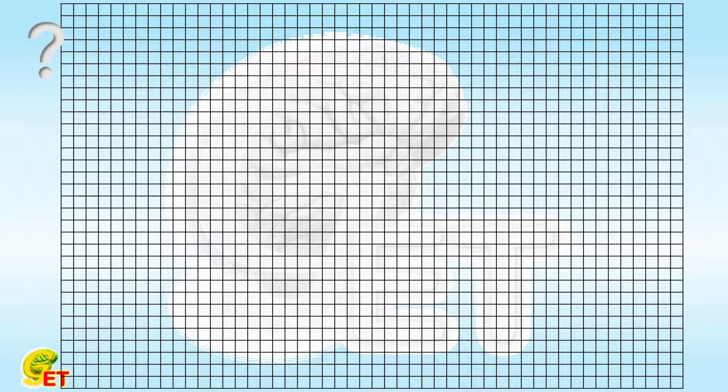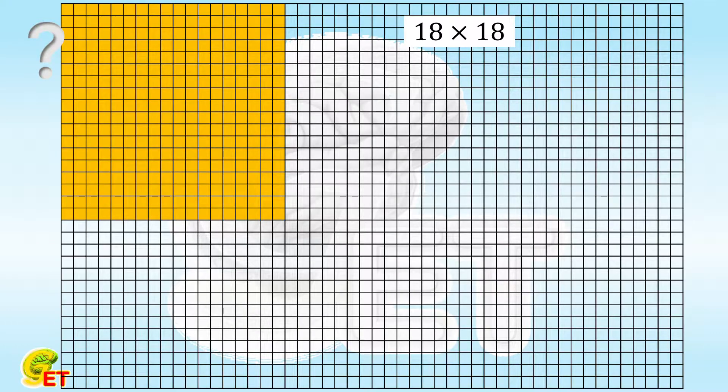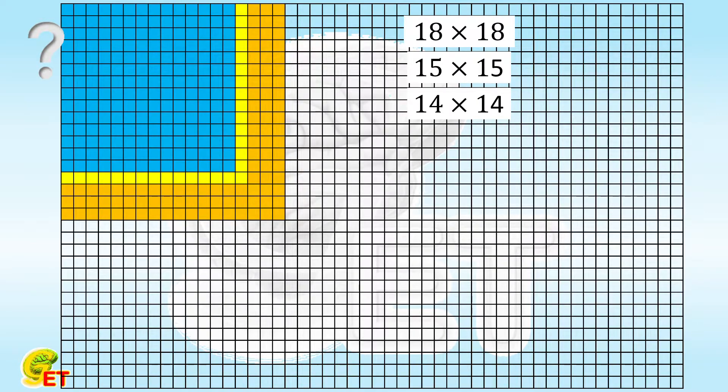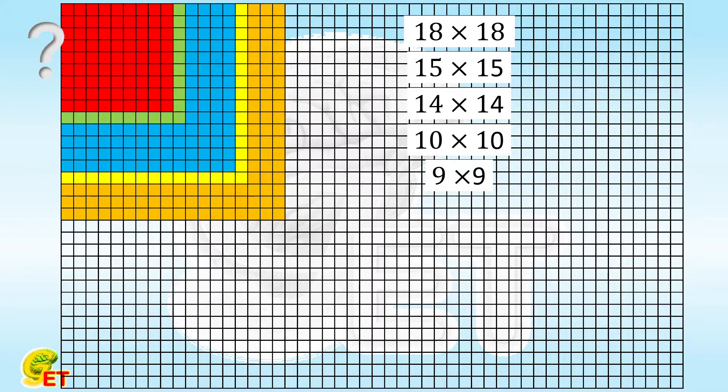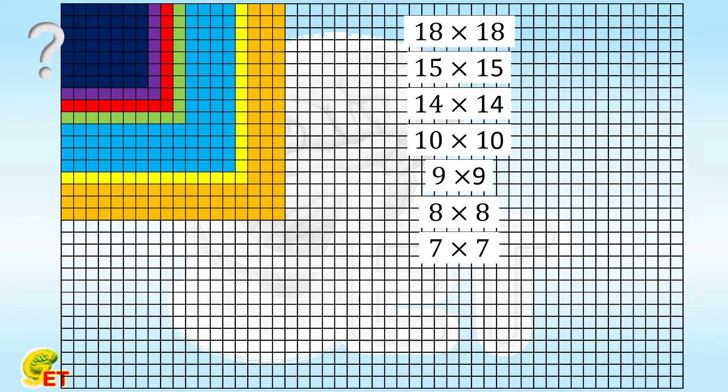This time, we have 9 square puzzles on a grid. Their sizes are 18 by 18, 15 by 15, 14 by 14, 10 by 10, 9 by 9, 8 by 8, 7 by 7, 4 by 4, and 1 by 1.